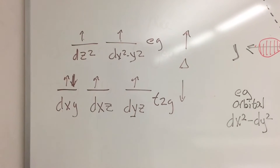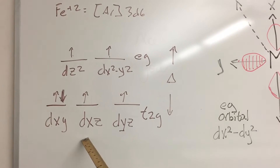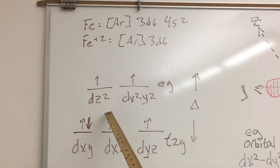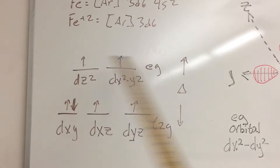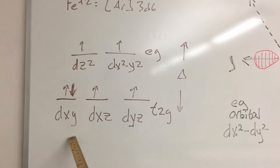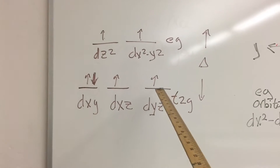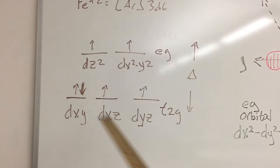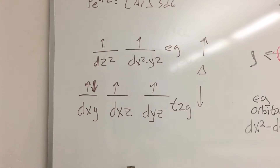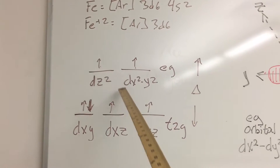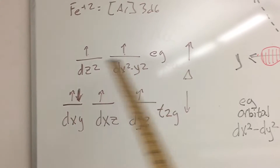Here is a generic crystal field splitting diagram. I've got my T2G orbitals down here — my DXY, my DYZ, my DXZ. And then I have my EG orbitals: the DZ squared, and the DX squared minus DY squared. These are orbitals aligned directly along the X, Y, or Z axes. The T2G orbitals are aligned in between the X, Y, and Z axes, and that's going to be important. I've populated the six electrons in a high-spin situation — a weak field. I could just as easily show a low-spin or strong-field situation where those electrons would be paired down in the three lower orbitals. Either way, this is just a generic setup to refresh you.